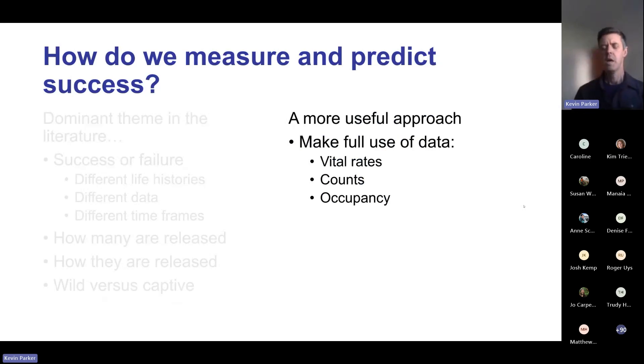A more useful approach is to make full use of the data available. The gold standard is vital rates - individual survival rates for males versus juveniles versus adults versus females - and productivity, so how many offspring per female. But of course it's very expensive and resource intensive.